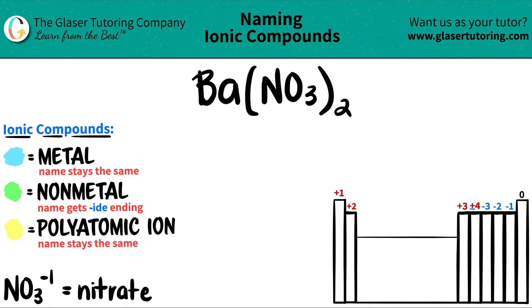Now, if we're dealing with ionic compounds and we see that we have three or more different elements, in this case we have three - we have barium, nitrogen, and oxygen - you know that you have at least one polyatomic ion.